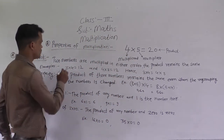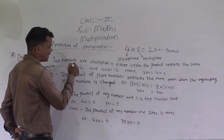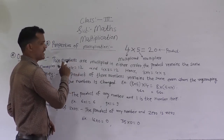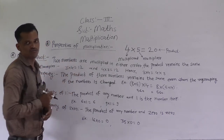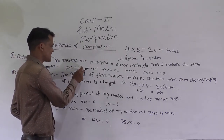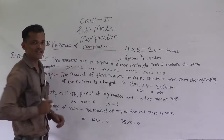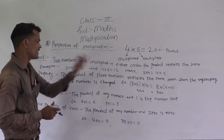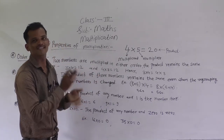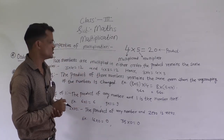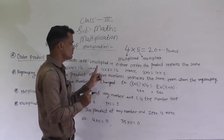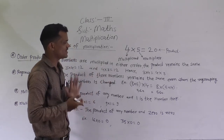Here there are 2 numbers, 3 and 4. 3 multiplied by 4 — the product comes as 12; 3 4s are 12. In another case, the numbers are the same, only their places are changed. Here 4 multiplied by 3 — 4 3s are 12. The product remains the same even when their places are changed.